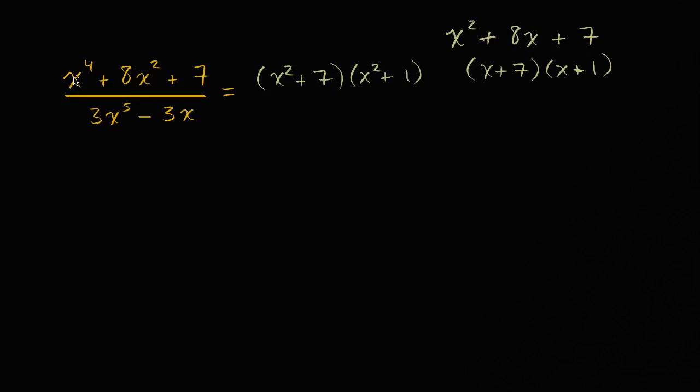If you want, you could do some type of a substitution, saying that a is equal to x squared, in which case this thing would become a squared plus eight a plus seven, and then you would factor this into a plus seven, and a plus one, and then you would undo the substitution, and that's x squared plus seven and x squared plus one. But hopefully you see what's going on here.